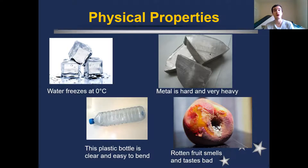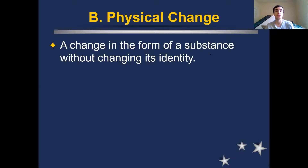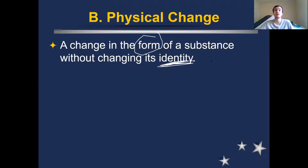Anything that you can observe about a substance — whether it's color, shape, size, smell, taste — all of those are physical properties of that substance. So if we take a substance and change it in some way, it might go through what's called a physical change. A physical change is when we change the form of a substance without changing its identity — we do not change it into something new, we just make it look a little bit different than it did before.